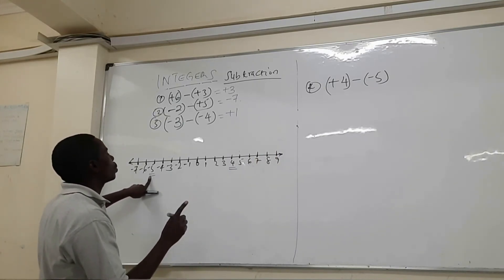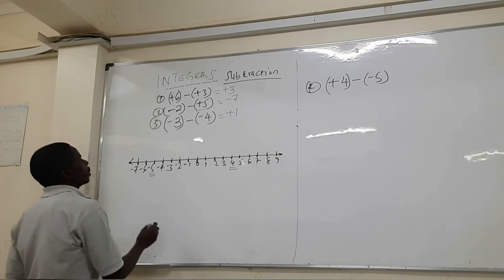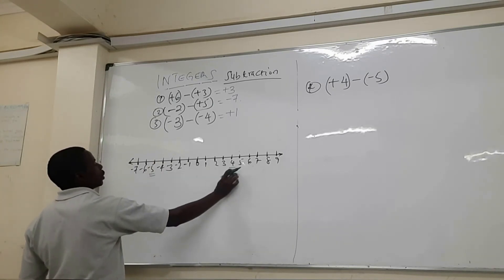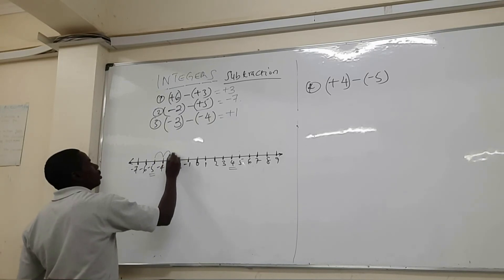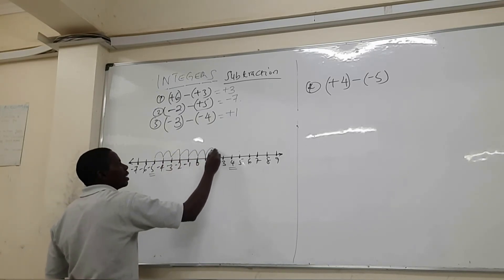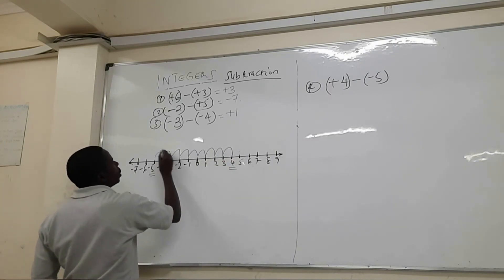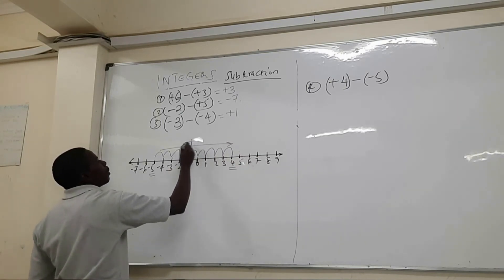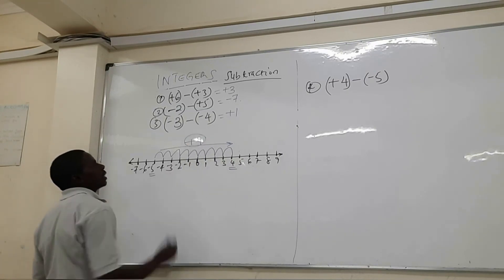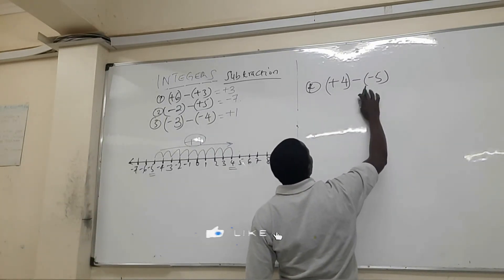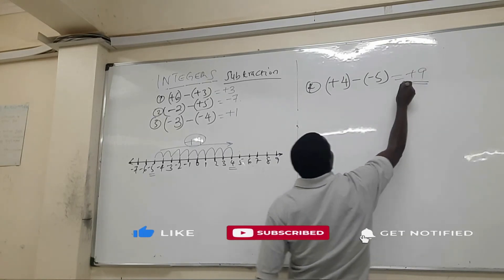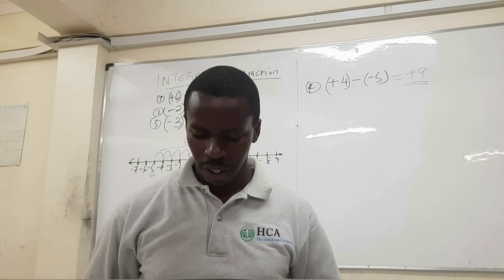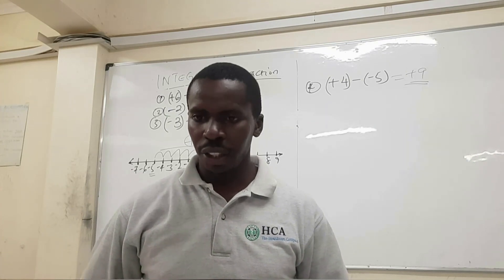We move from minus five to positive four, counting the number of steps and checking the direction. From minus five to positive four we count — one, two, three, four, five, six, seven, eight, nine. We have moved to the right-hand side, so that is positive. Nine steps means our answer is plus nine. So plus four minus minus five gives us plus nine. That's how we perform subtraction using the number line. Thank you for your time.